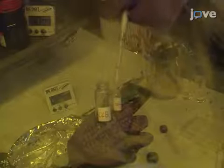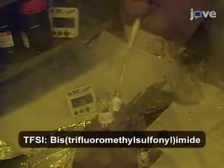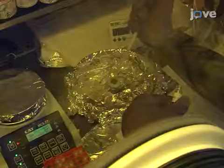To deposit the hole transport layer, first add 1 milliliter of chlorobenzene to 72.3 milligrams of spiro-OMeTAD. Shake the mixture until the solution appears transparent. Prepare a stock solution of 520 milligrams of lithium TFSI and 1 milliliter of acetonitrile. Then mix 17.5 microliters of the lithium TFSI solution and 28.8 microliters of 4-tert-butylpyridine with the spiro-OMeTAD solution. Spin coat the sample with this mixture for 30 seconds at 4,000 RPM with a ramp rate of 2,000 RPM per second.